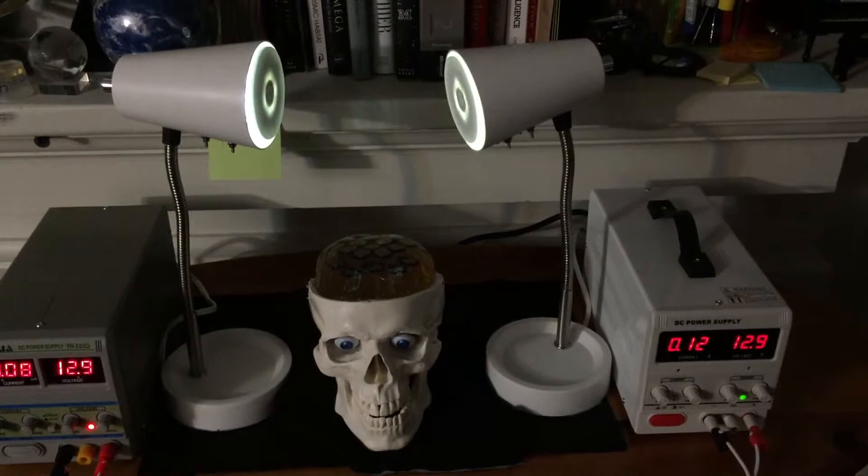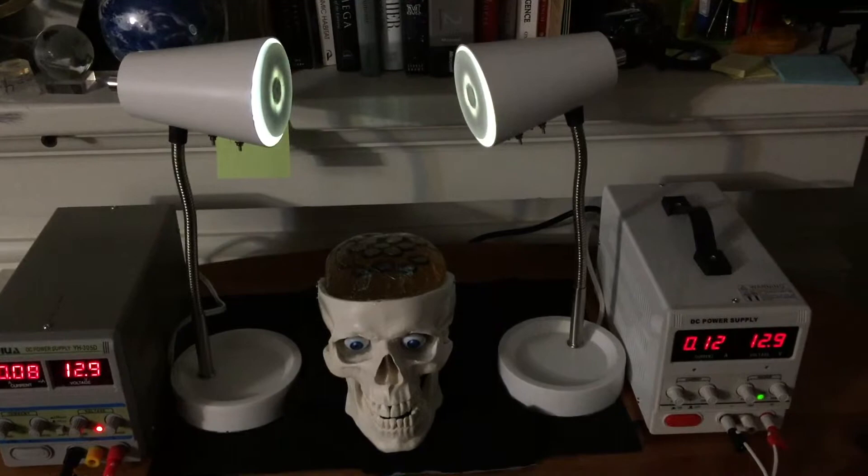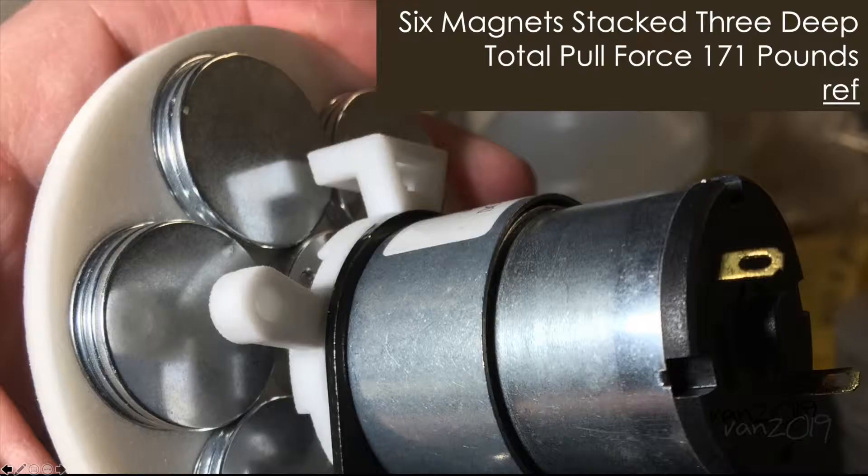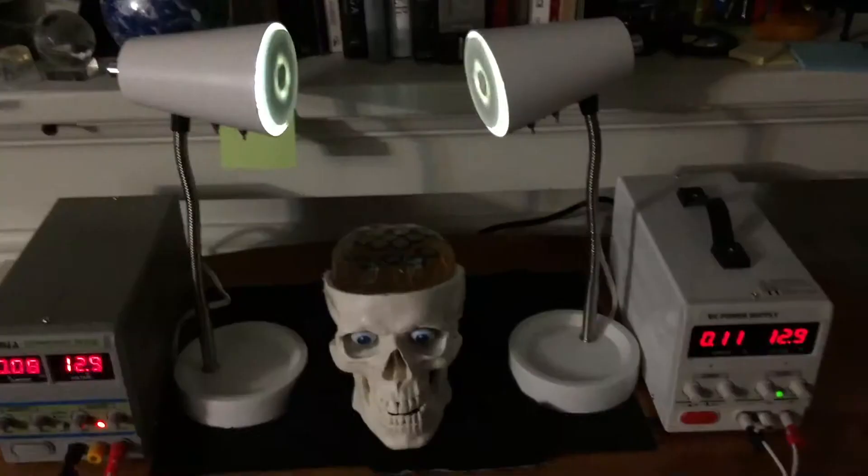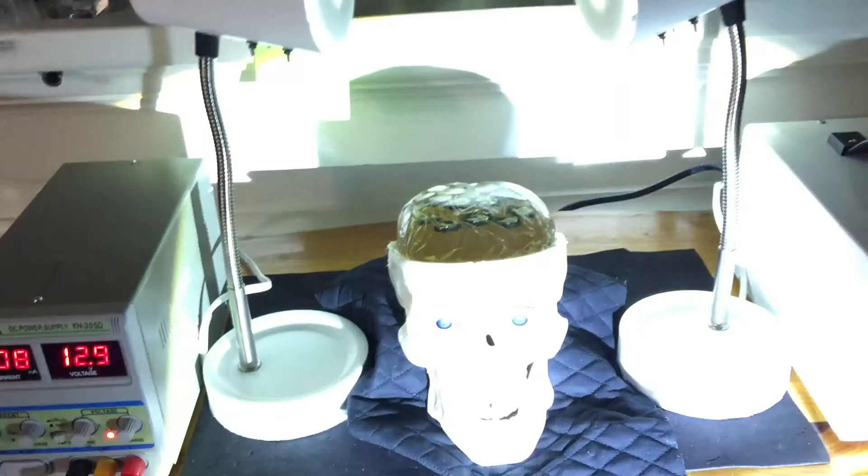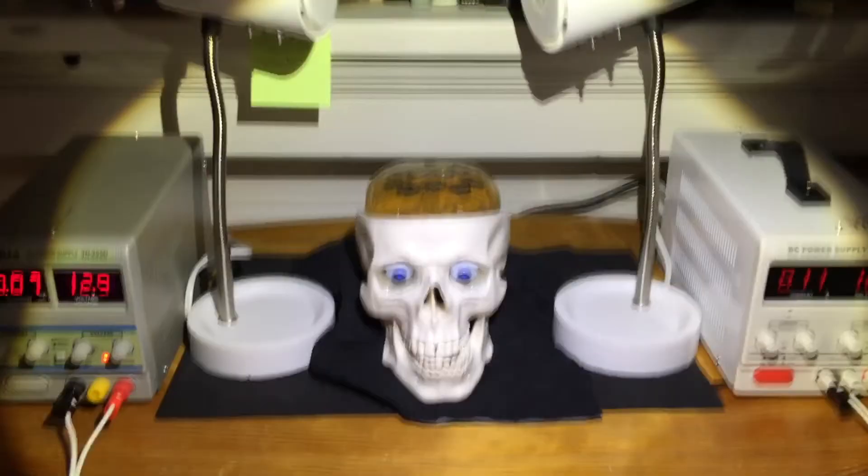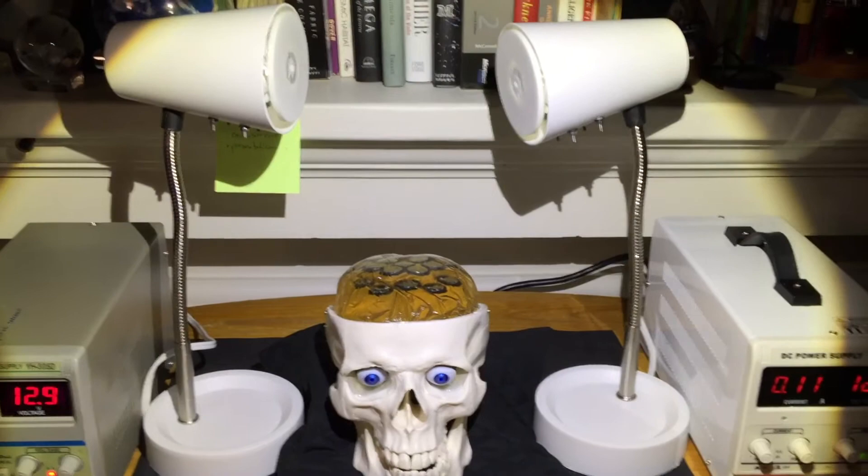So I'm going to show you a little video of how this worked. Okay, this is the prototype running. The two TMS units are spinning under control of their respective power supplies, and they each contain an array of six times three magnets, 18 magnets each in the hexagon. And then the simulated brain is here.